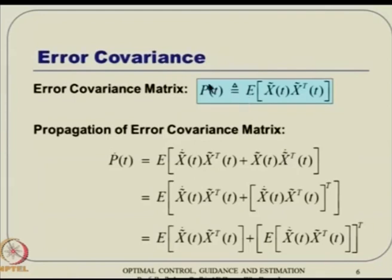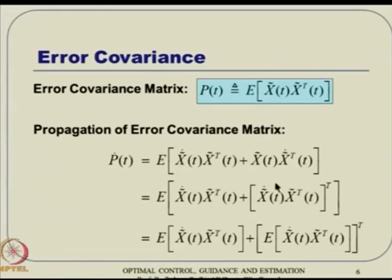We derived P_dot, which is the expected value of the derivative of the error covariance. Since expected value and derivative are both linear operators, they commute, so the derivative goes inside. P_dot can be expressed as a term plus its transpose. To evaluate this, we needed x_tilde_dot, which comes from the x_tilde definition: x_tilde_dot = x_dot - x_hat_dot. Substituting the dynamics and observer equations, we get x_tilde_dot = (A - K_e*C)*x_tilde + G*w - K_e*v, so the error dynamics is affected by both process noise and sensor noise.